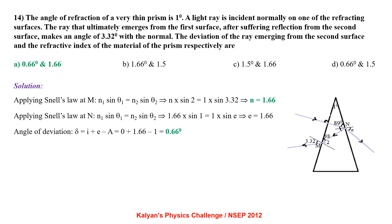The angle of refraction of a very thin prism is 1°. A light ray is incident normally on one of the refracting surfaces. The ray ultimately emerging from the first surface after reflection from the second surface makes an angle of 3.32° with the normal. Applying Snell's law at M: N sin 2° = sin 3.32°, giving N = 1.66. Applying Snell's law at N: 1.66 sin 1° = sin e, giving e = 1.66°. Angle of deviation δ = i + e − A = 0 + 1.66 − 1 = 0.66°.